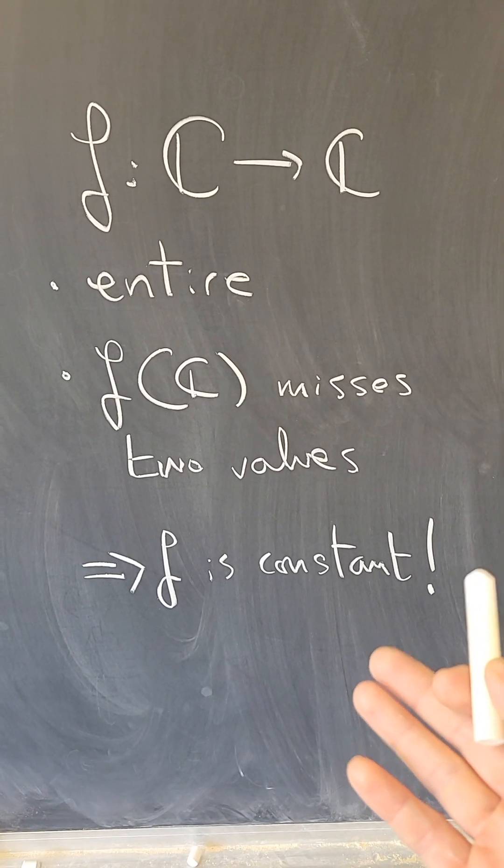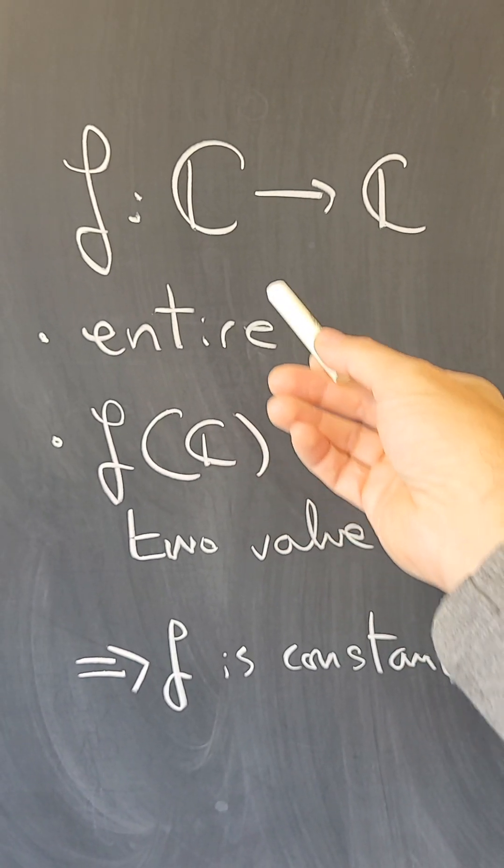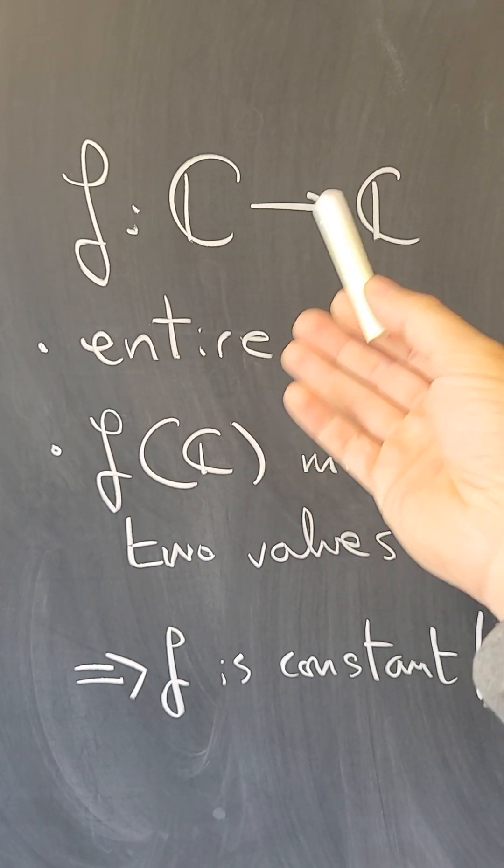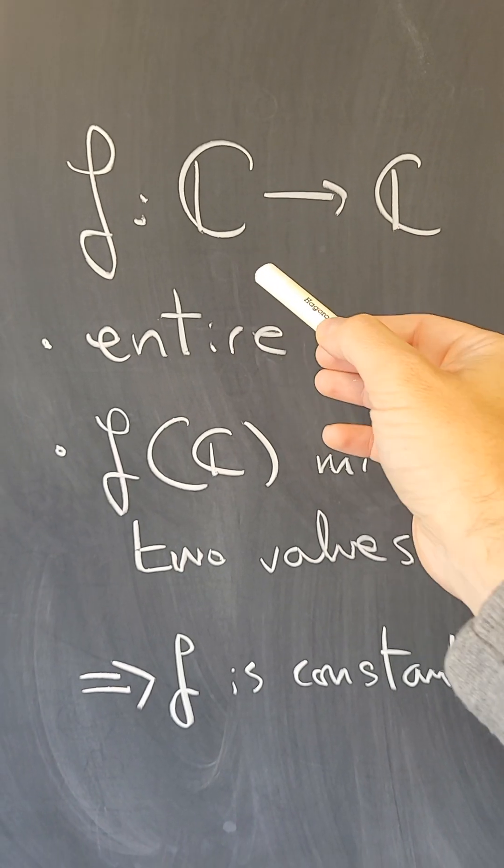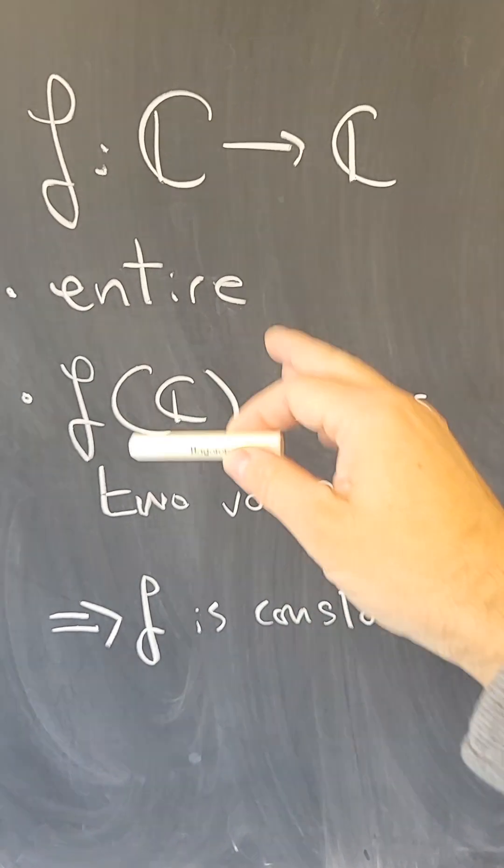One way to express the theorem is the following: suppose you have a function of the complex numbers that is entire, so it's holomorphic in all the complex numbers, so it has a complex derivative at every point, and the image misses two values—0 and 1,